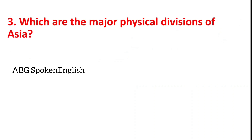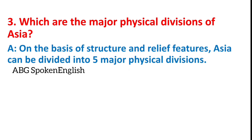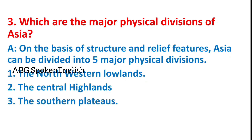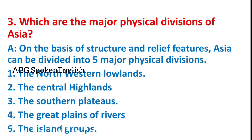Which are the major physical divisions of Asia? On the basis of structure and relief features, Asia can be divided into five major physical divisions: the northern-western lowlands, the central highlands, the southern plateaus, the great plains of rivers, and the island groups.